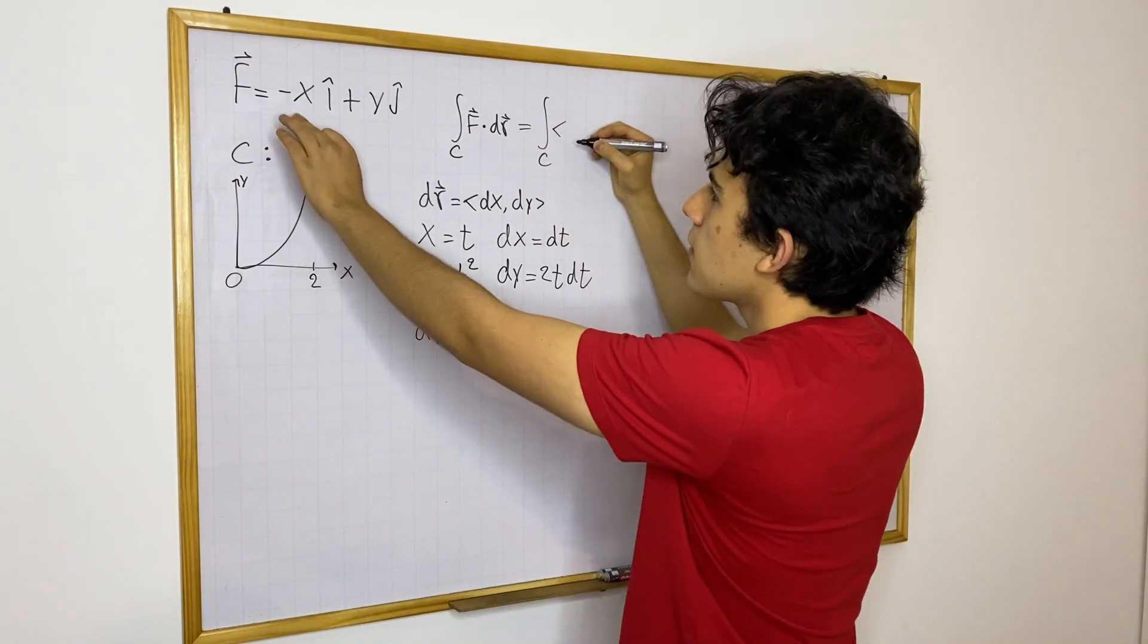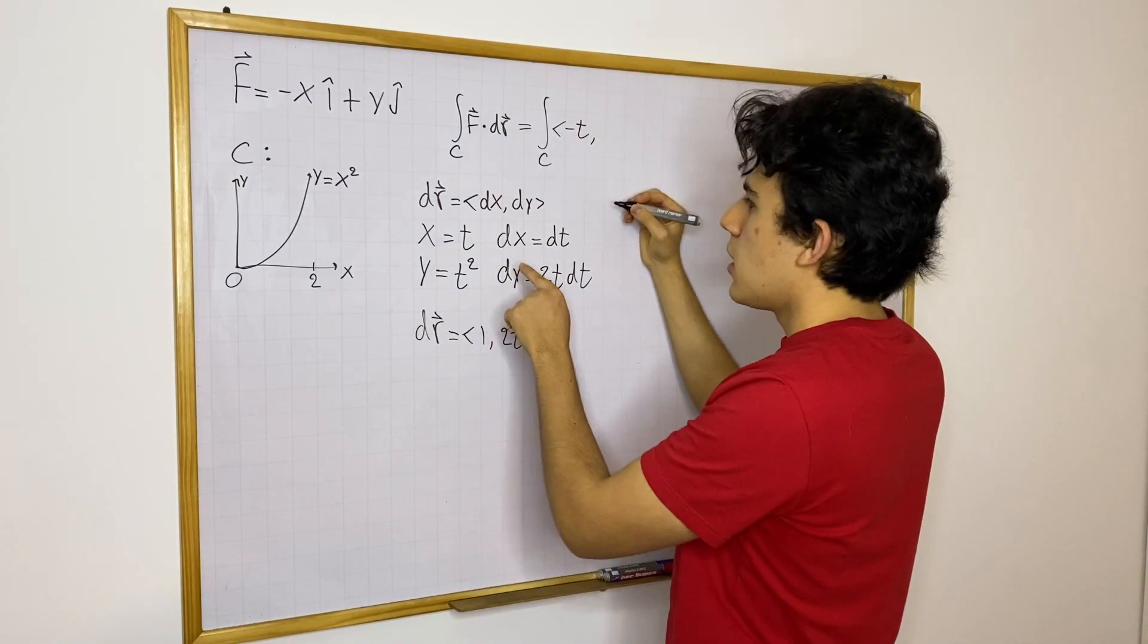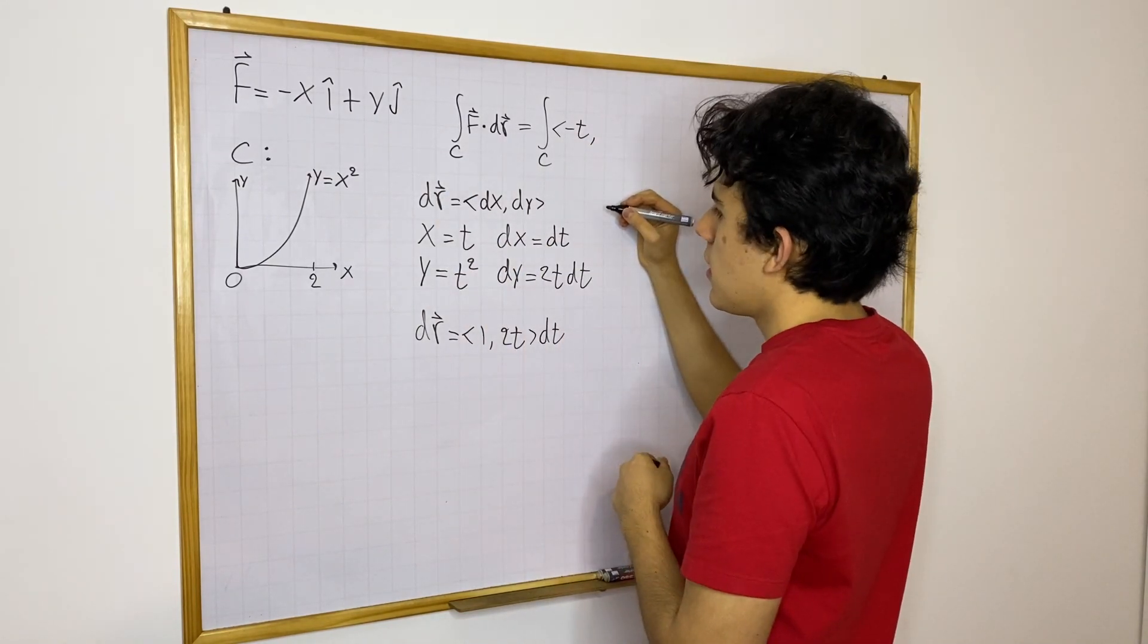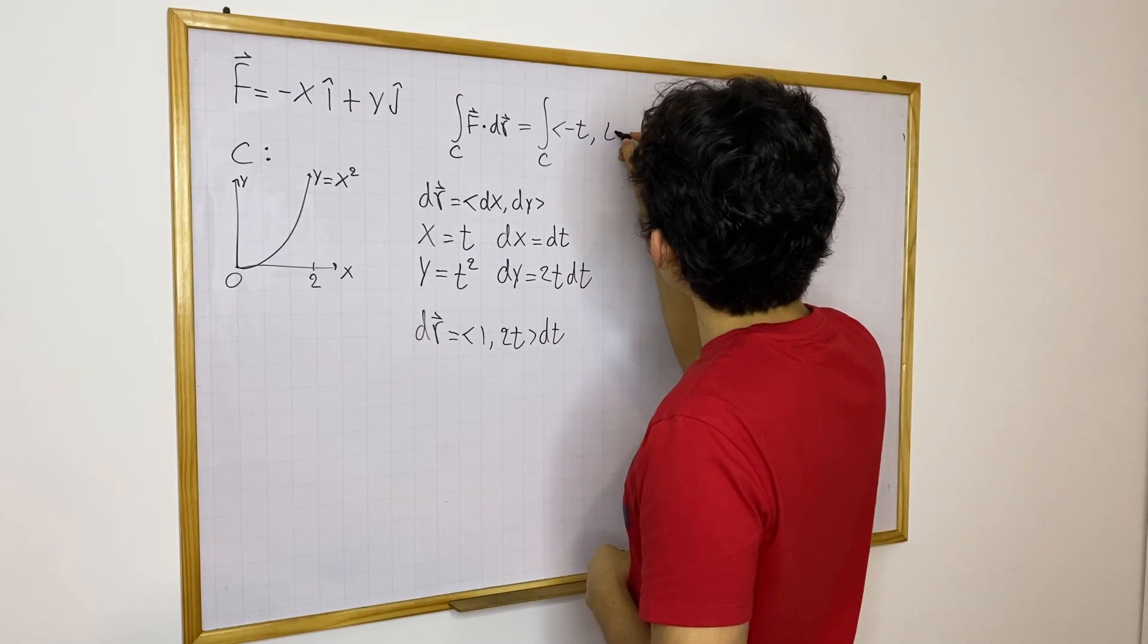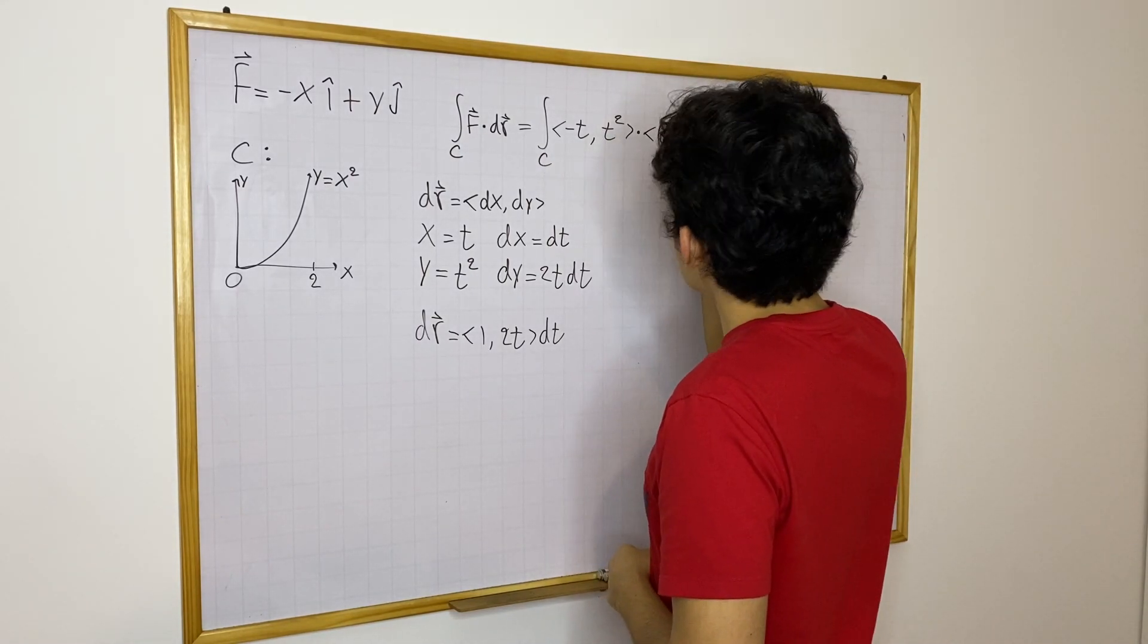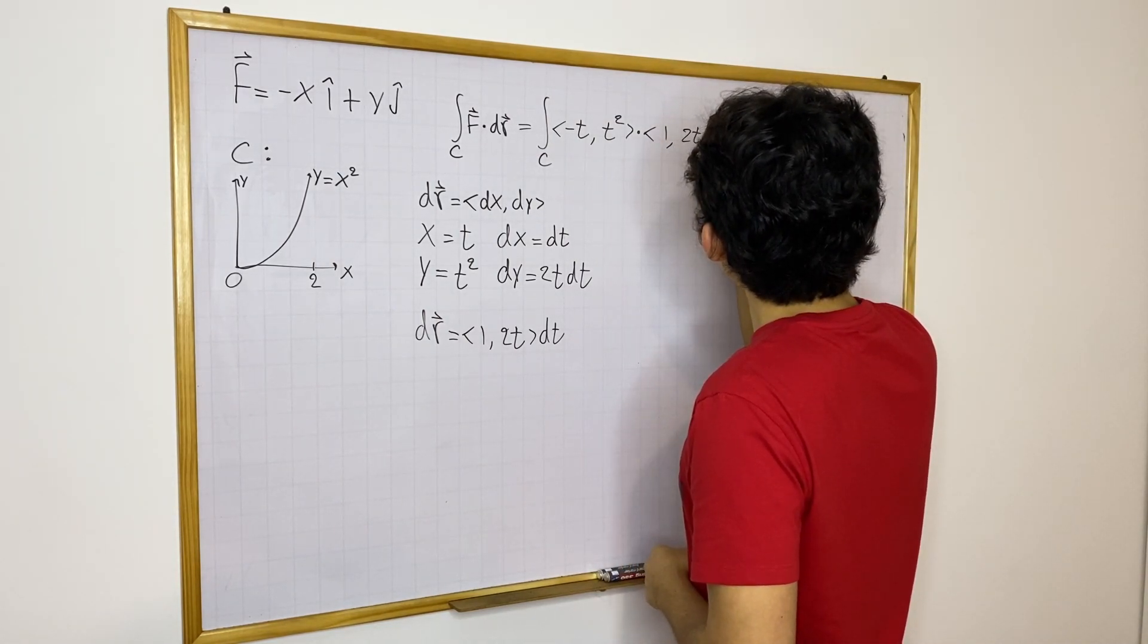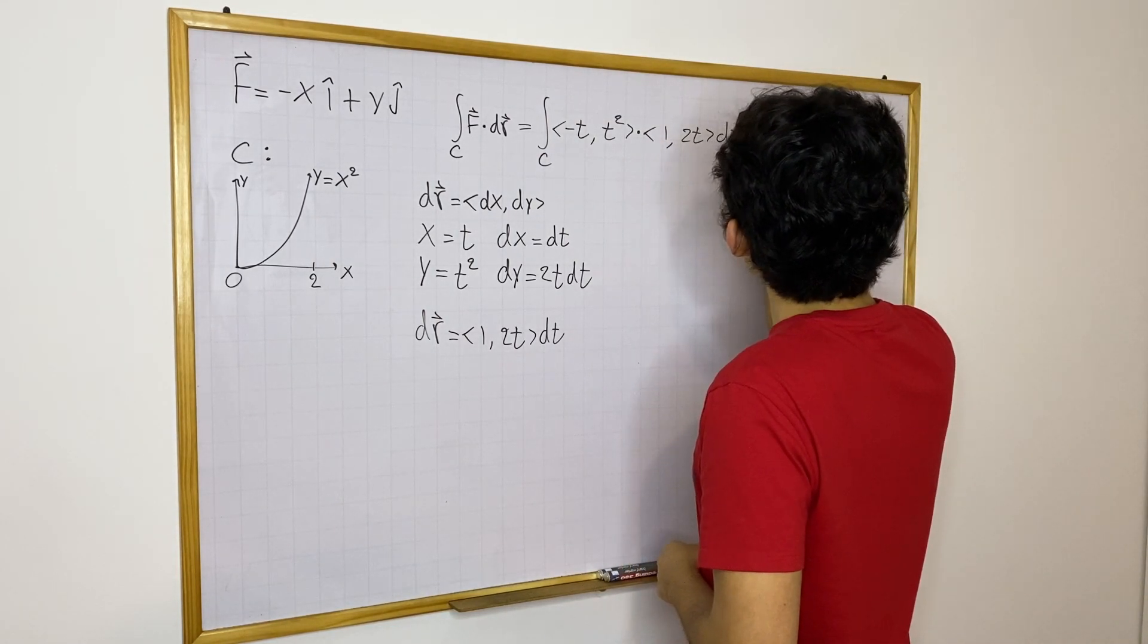So then we have the following, remember f is going to be minus x, so that is minus t, comma, then plus y, that will be t squared, so then t squared dot with (1, 2t) dt. Nice.